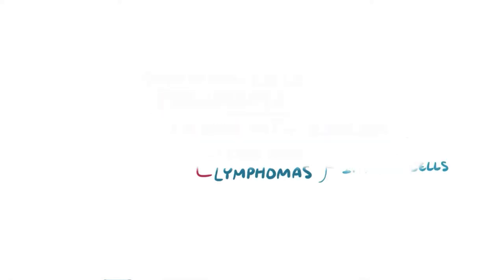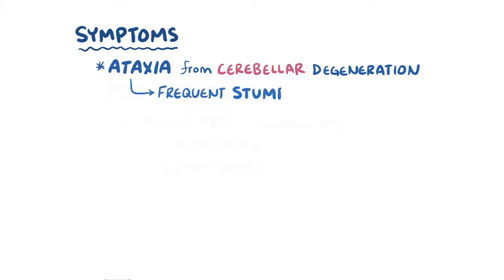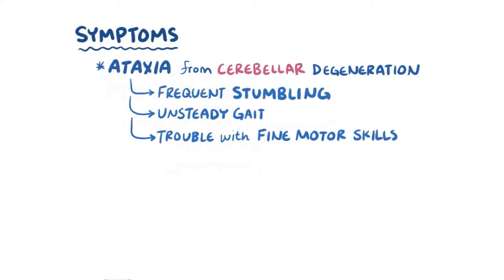A main symptom for people with ataxia telangiectasia is ataxia as a result of cerebellar degeneration. This can cause frequent stumbling or unsteady gait,